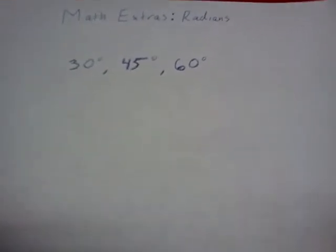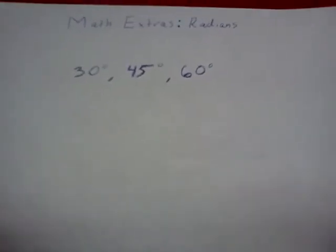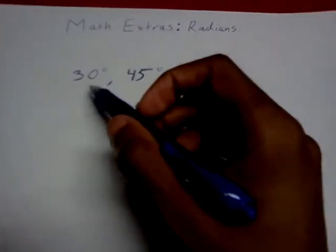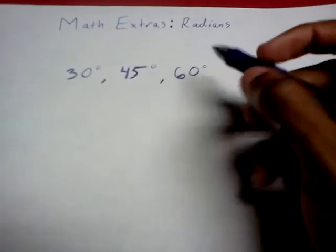Hello, everybody. Today I'm going to show you a really fast method for finding the unit circle radians for 30 degrees, 45 degrees, and 60 degrees. So let's get started.